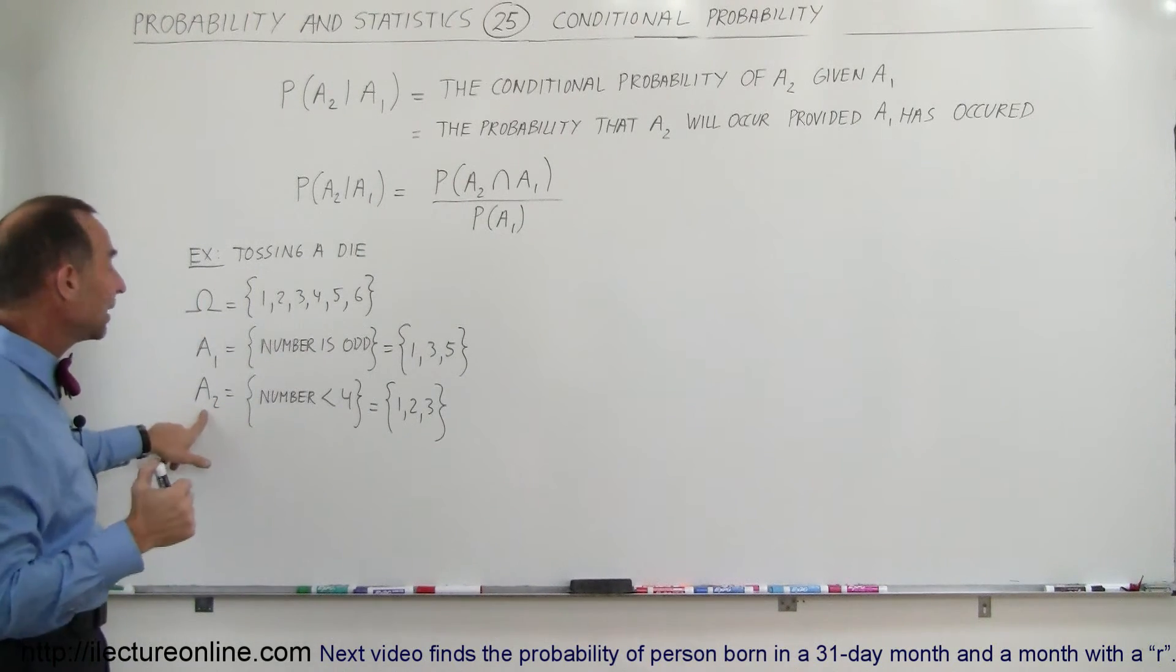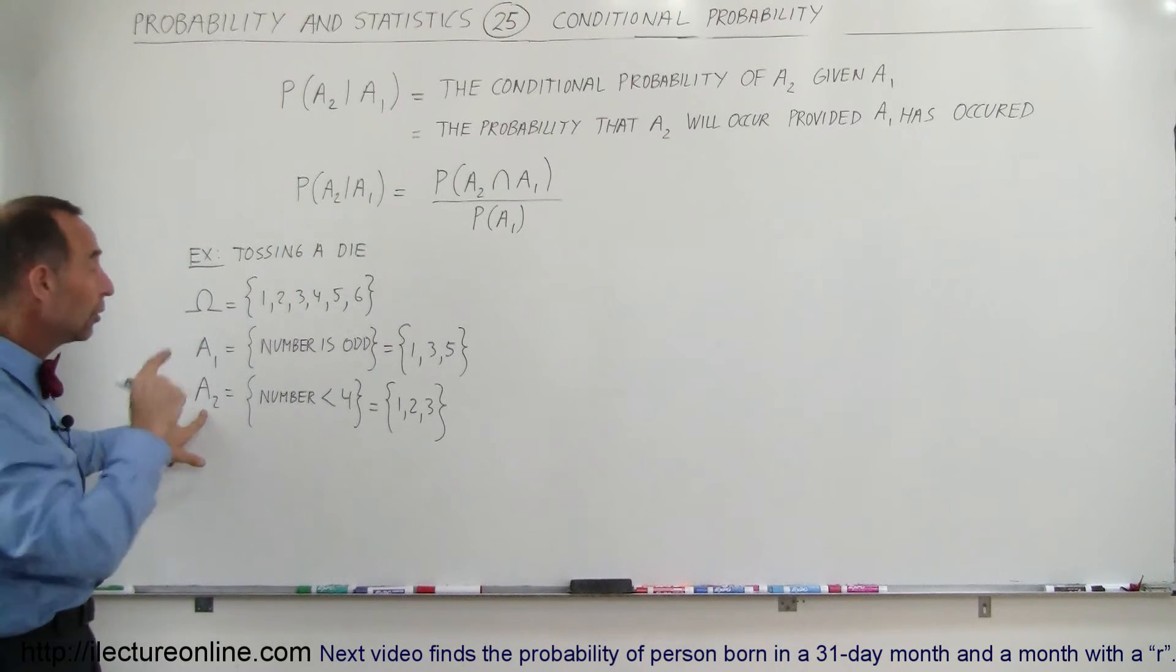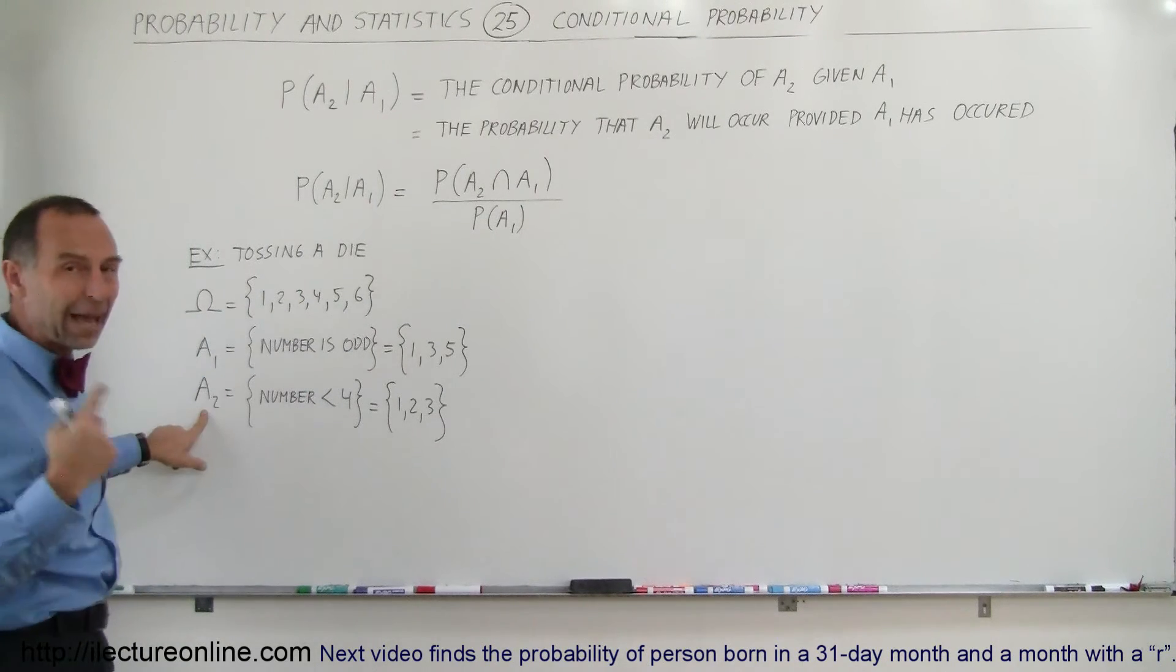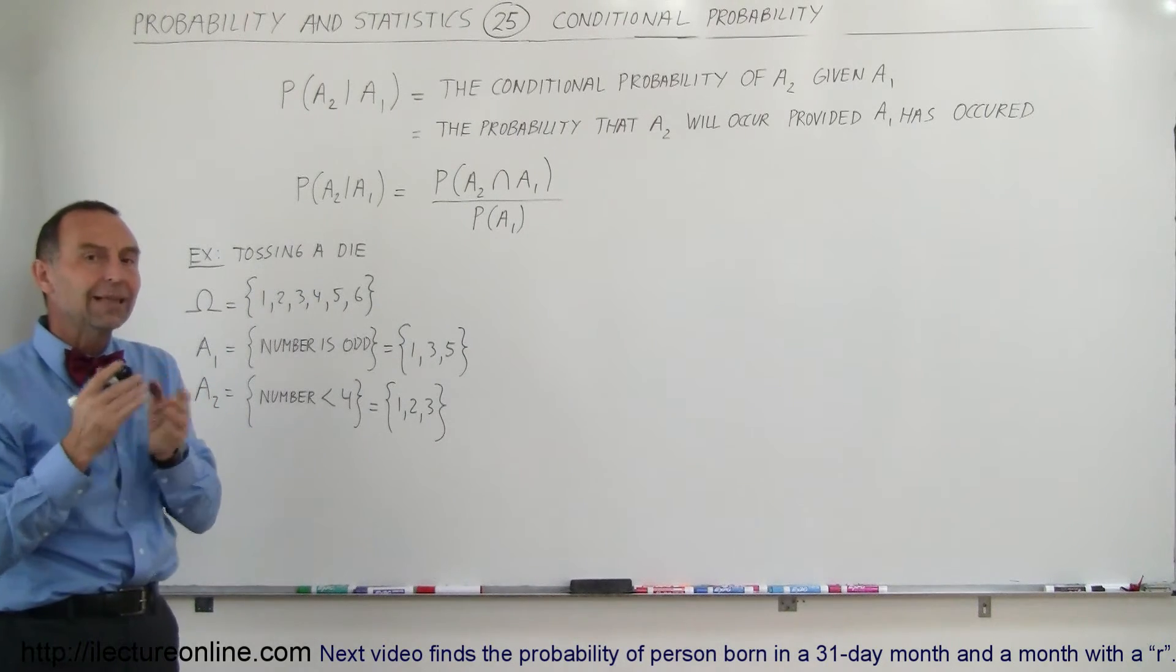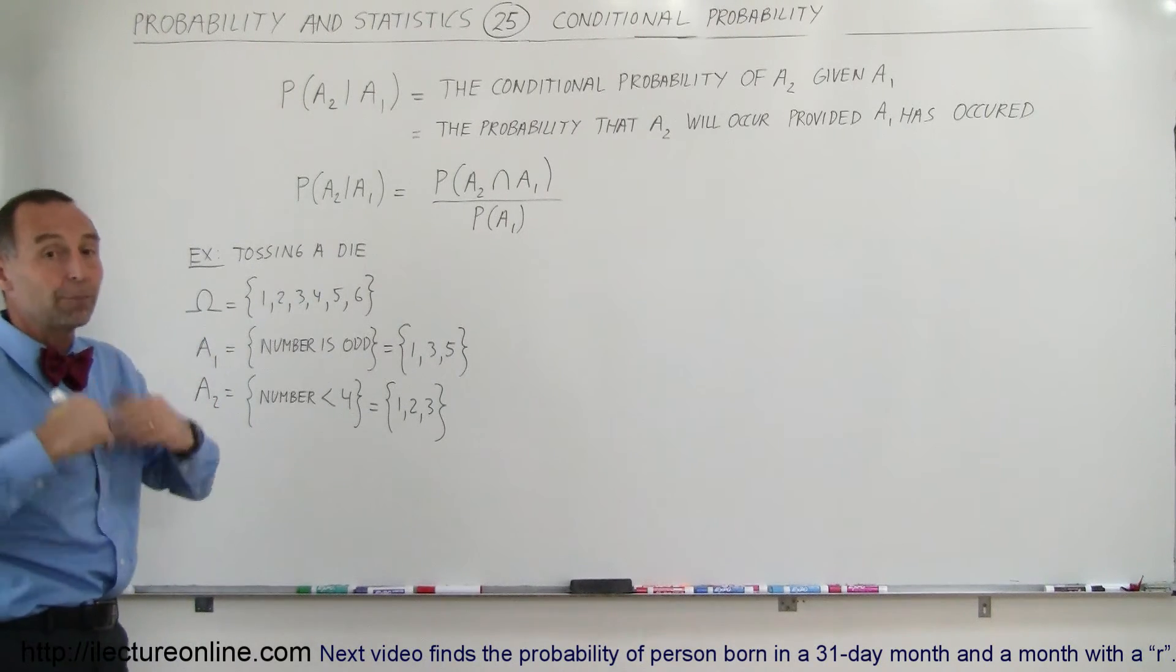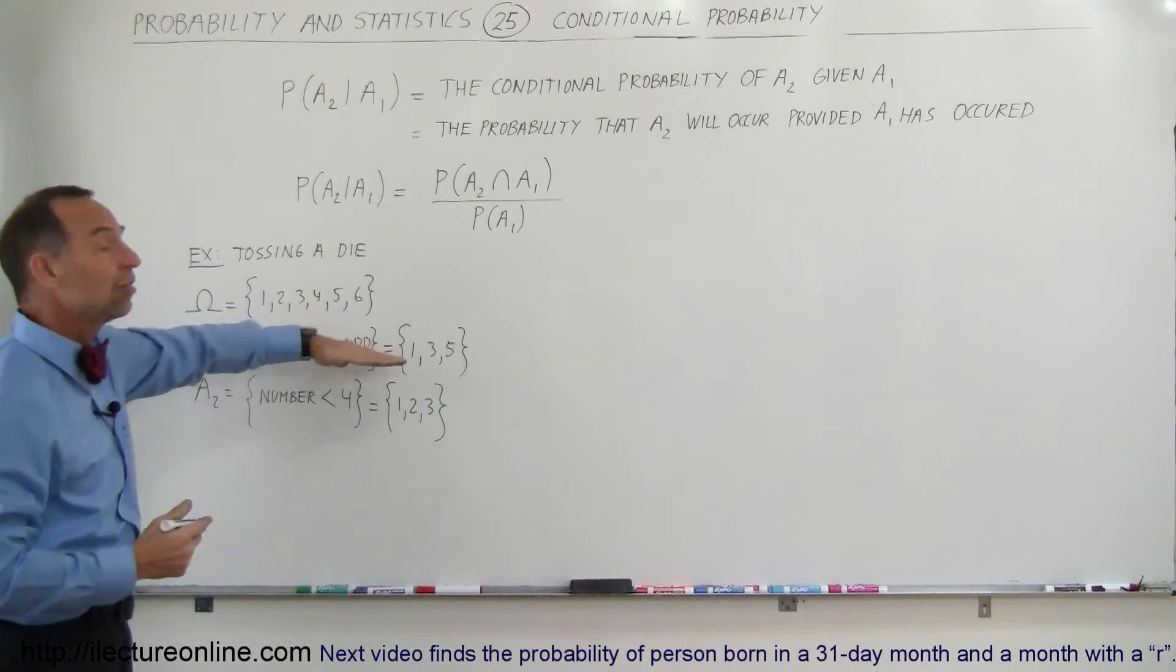Therefore, the probability that the second event will occur depends upon the knowledge of what happened in the first event. And then they say, what is now the probability that the number is less than 4 provided that the number is an odd number.